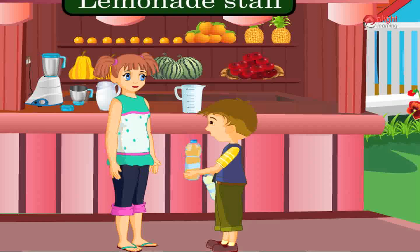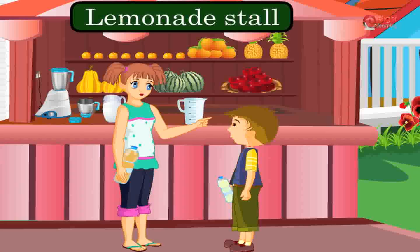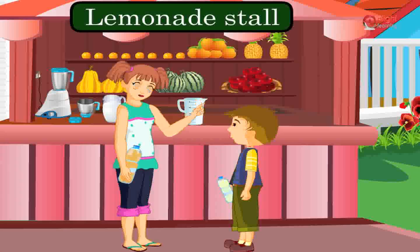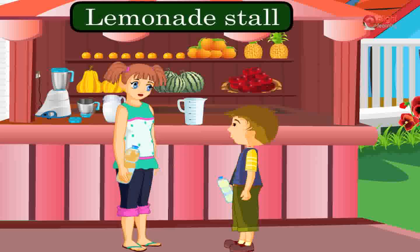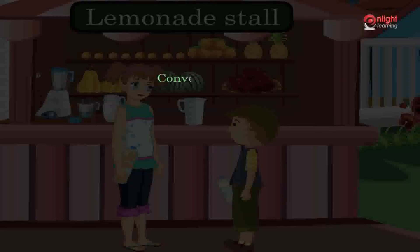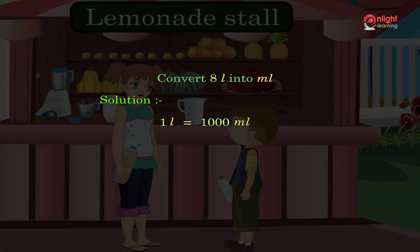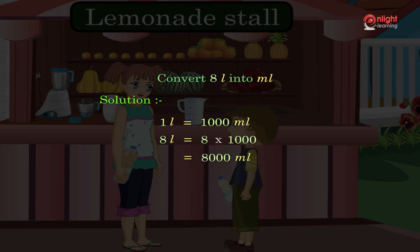Thank you Millie! Sam, always remember that to convert liters into milliliters, we multiply by one thousand. For example, convert 8 liters into milliliters: 8 liters multiplied by 1000 is equal to 8000 milliliters.